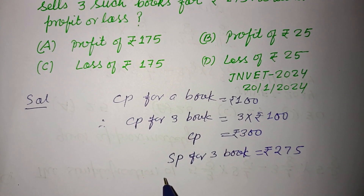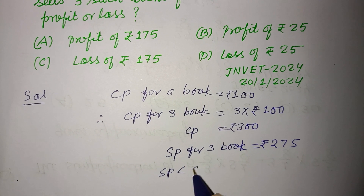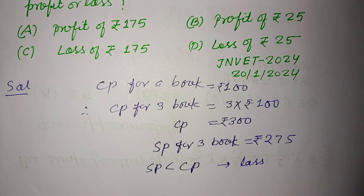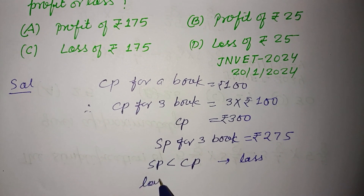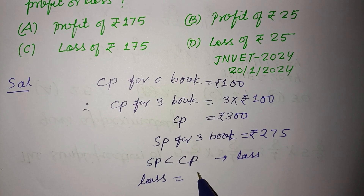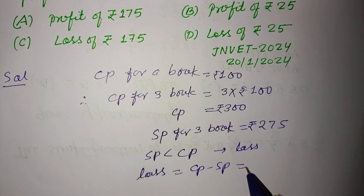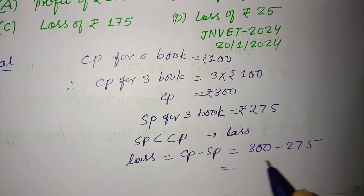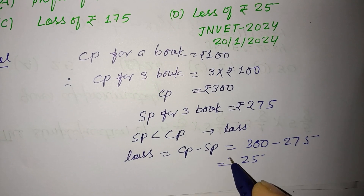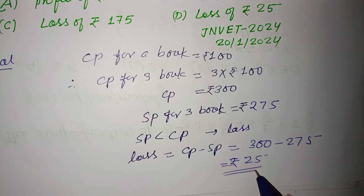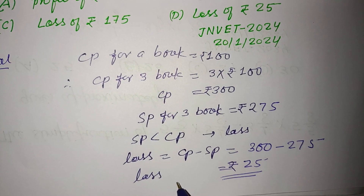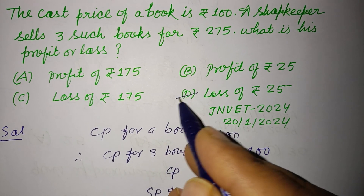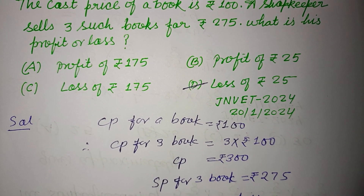So here SP is less than CP, therefore a loss happened. Loss is CP minus SP: 300 minus 275, which equals Rs. 25. So a loss of Rs. 25 occurred. Answer D is correct — loss of 25.